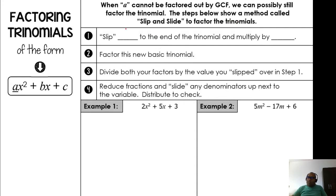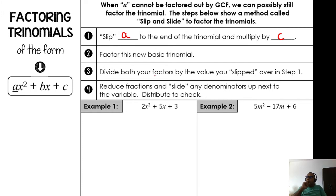Step one: you slip a — the quadratic coefficient — to the end of the trinomial and multiply by c. Step two: factor this new basic trinomial as usual. Step three: divide both your factors by the value you slipped over in step one. Step four: reduce the fractions and slide any denominators up next to the variable, then distribute to check.